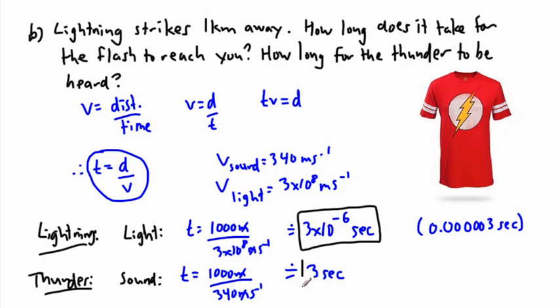Notice the difference. This is a really important thing. Lightning took 0.00003 seconds to reach you, so really fast. Whereas the thunder takes a whole 3 seconds. And actually, I like to use this little trick. This is close to 333, and the reason why I use that number is because it's approximately 3 seconds for every kilometer away.